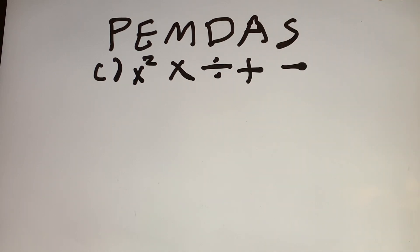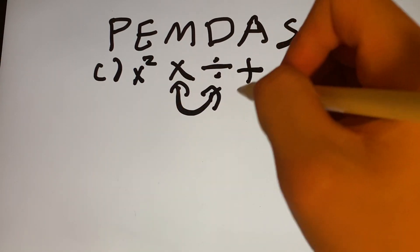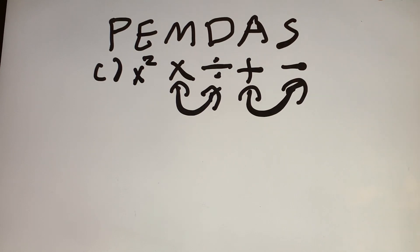So basically how the order goes is that multiplication and division are reversible and depends because you're reading them from left to right. And then similar with addition and subtraction, it's the same thing.